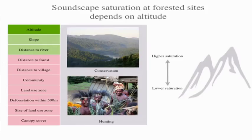We also looked at what matters at the forested sites, and it seemed that altitude was the most important variable — the higher you go, the more saturated the soundscapes are. If that corresponds to higher bird biodiversity, it would fit pretty well with what traditional surveys have found: that altitude is the most important factor determining species richness.